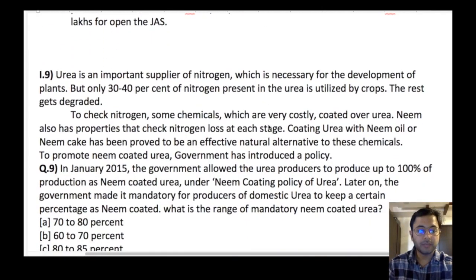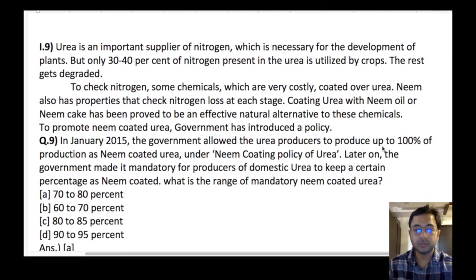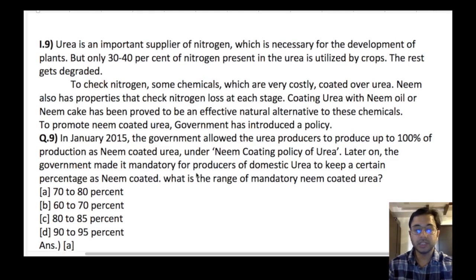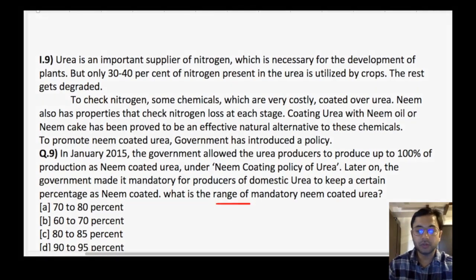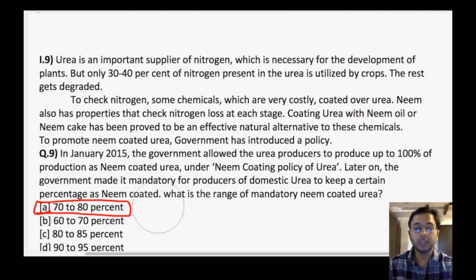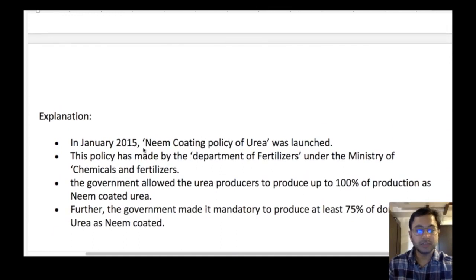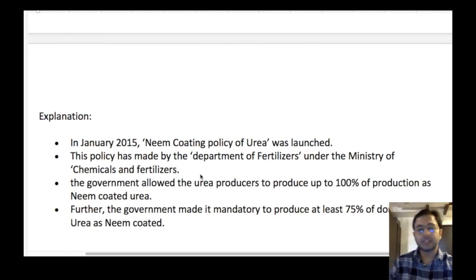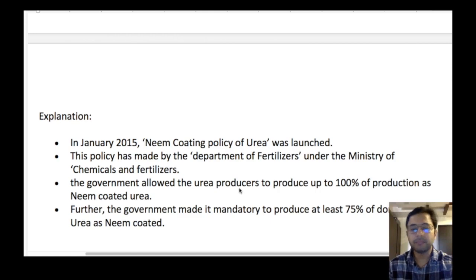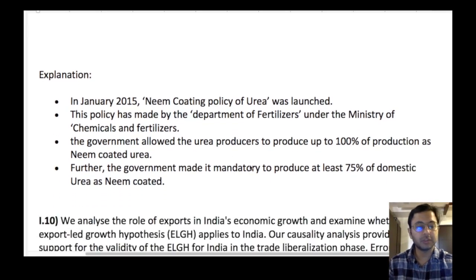Next question on urea: in January 2015, the government allowed urea producers to produce up to 100% of production as neem-coated urea. Later, the government made it mandatory for producers of domestic urea to keep a certain percentage as neem-coated. What is the range of mandatory neem-coated urea? The range is 70 to 80 percent. Neem Coating Urea Policy was launched in 2015, made by the Department of Fertilizers under Ministry of Chemicals. This might not seem directly important for social welfare but neem-coated urea has been in use for quite some time, hence the question.